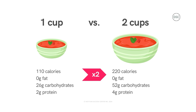For example, if the serving size says one cup but you're going to eat double that amount — so two cups — you would have to double all of the nutrition values in the table. So 110 calories becomes 220 calories, and so on.